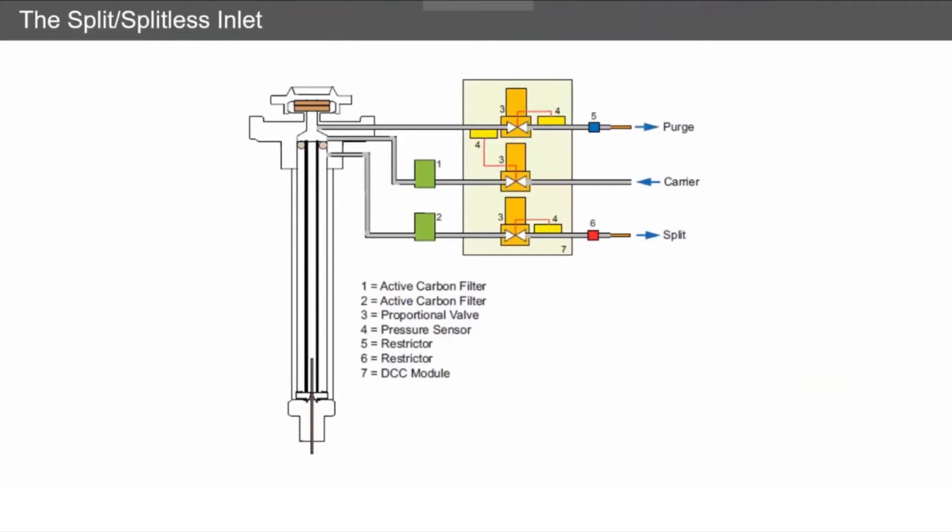How does the split/splitless inlet work? Irrespective of manufacturer, this is essentially what a split/splitless inlet will look like. You have a purge flow coming out the top to take away any septum bleed and keep the top of your liner clean. You've got your carrier gas going in - the flow is controlled by pressure restrictors and various sensors. Then you've also got your split line coming out.